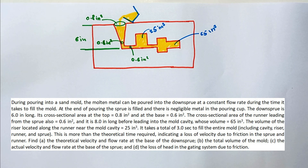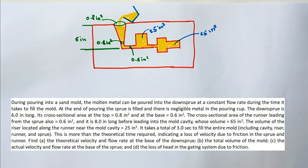This is more than the theoretical time required, indicating a loss of velocity due to friction in the sprue and runner system. Find: (a) the theoretical velocity and the flow rate at the base of the down sprue, (b) the total volume of the mold, (c) the actual velocity and flow rate at the base of the sprue, (d) the loss of head in the gating system due to friction.